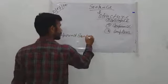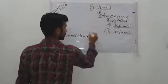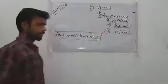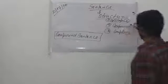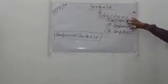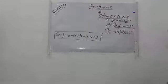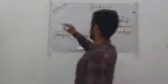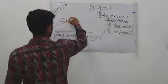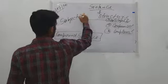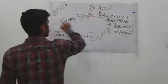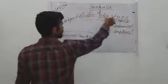Compound sentence. As you know, there are three types of sentences on the basis of structure: simple, compound, complex. For simple sentence, I have told you that there is only one subject, only one finite verb, and only one full stop. So this is simple sentence.